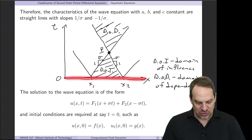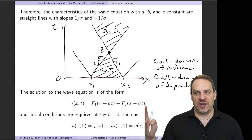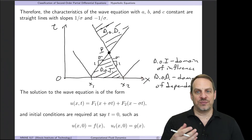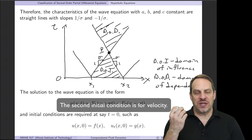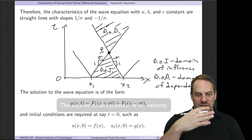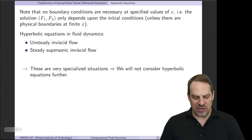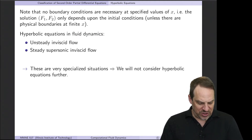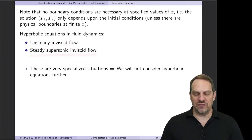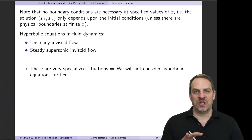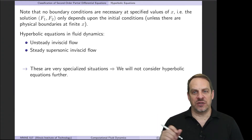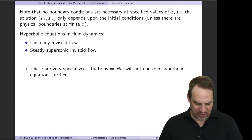For the wave equation on an infinite string with no boundaries, we only need two initial conditions—specifying u at t = 0—and the solution propagates forward in time along these waves. In fluid dynamics, examples of hyperbolic equations include unsteady inviscid flow and steady supersonic inviscid flow. We won't focus much on hyperbolic equations; we'll concentrate on parabolic and elliptic equations for our numerical methods discussion.